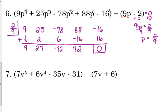And then, remember, we go back in. We started, our problem started with p to the 4th, so now it's going to be p cubed, p squared, p, and then a constant. So this is our answer, 9p cubed plus 27p squared minus 72p plus 72.